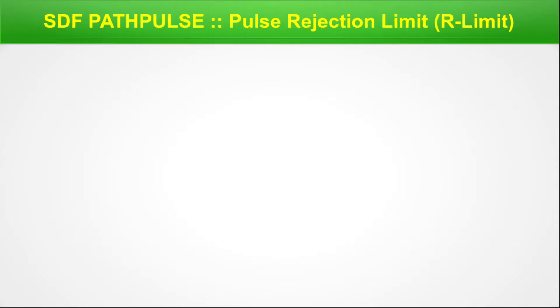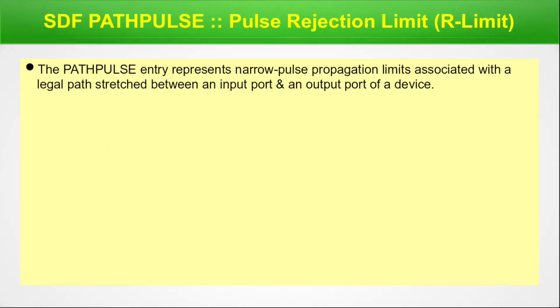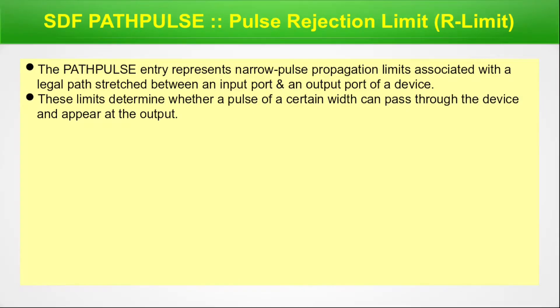SDF path pulse — pulse rejection limit, also called r-limit. The path pulse entry represents a narrow pulse propagation limit associated with a legal path between an input port and an output port of a particular device. These limits determine whether a pulse of a certain width can pass through the device and appear at the output.